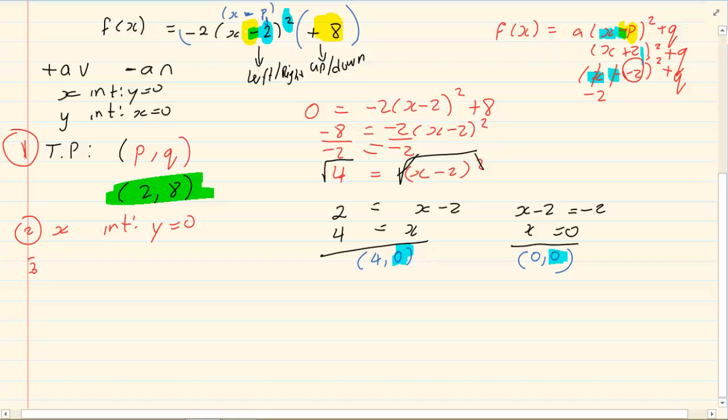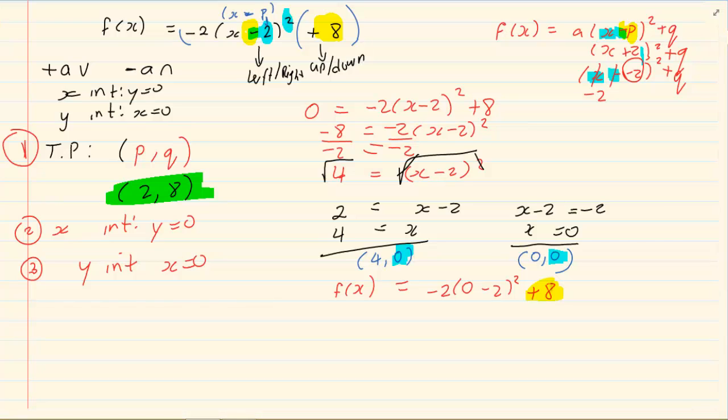Then we are going to do number 3, our y intercepts. Y intercept means x is equal to 0. So we are going into the formula and wherever x is we are putting 0. Now at this space I would like to remind you that it is not simply 8. Like in other graphs when it is a different form of a quadratic graph it tends to be the last number. But you must be careful in just assuming that you can make a big mistake. It is safer to rather substitute your 0s in and then calculate it.